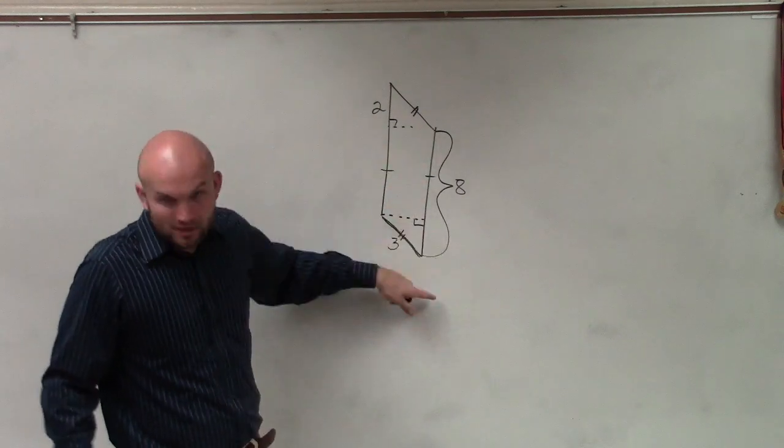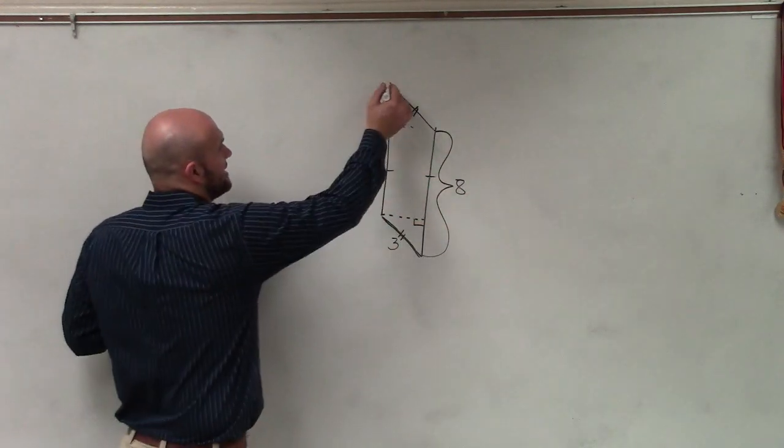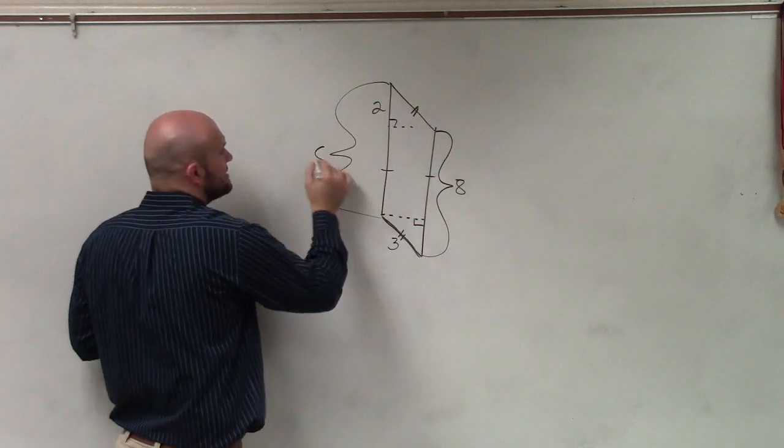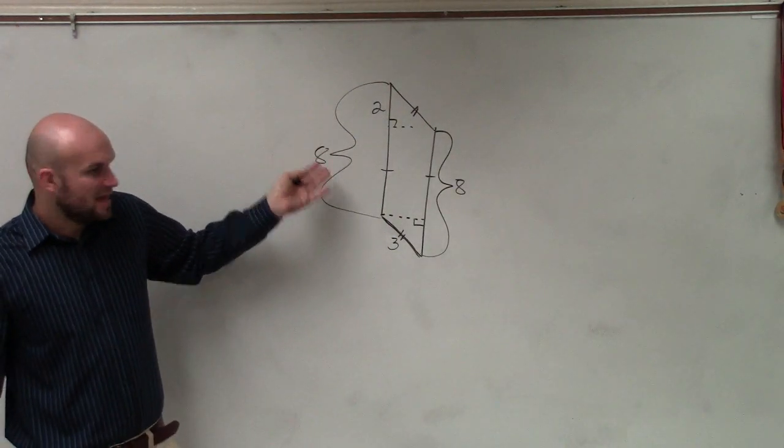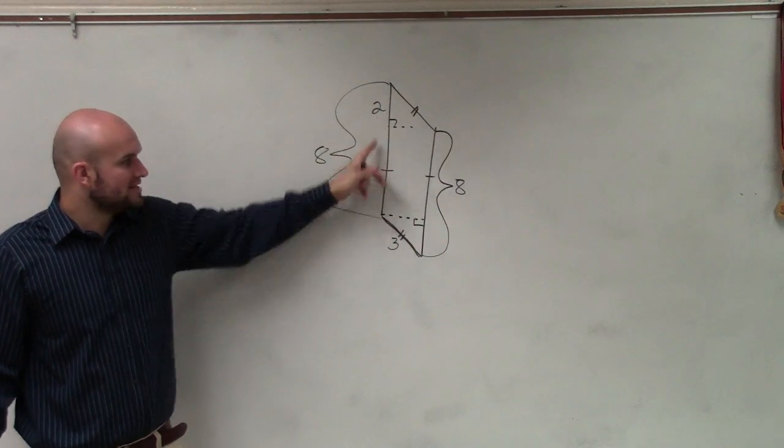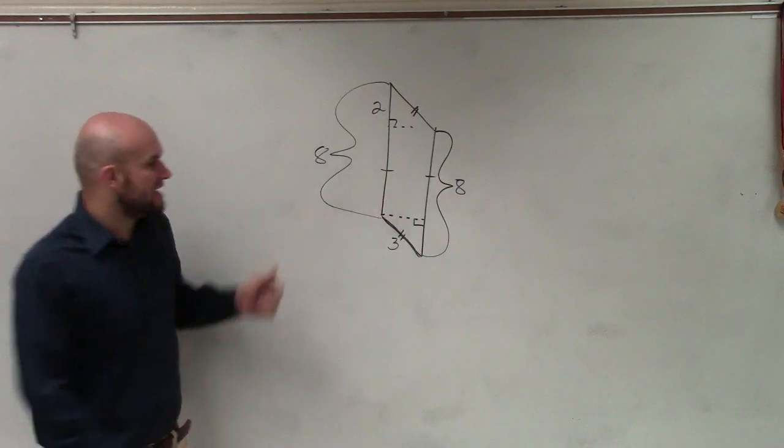Now, this whole length is eight. So, then can I now say that that whole length is eight? Yes. So, if this whole length is eight, and that whole length is two, what does this whole length have to be? Six.